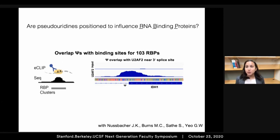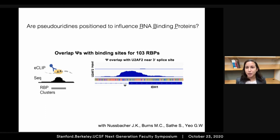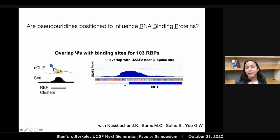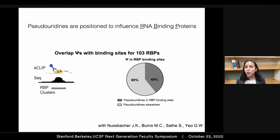To ask whether pseudouridines are positioned to influence the binding of RNA binding proteins, we collaborated with Dean Yo's lab at UCSD, where they've done UV cross-linking, immunoprecipitation, and sequencing of bound RNAs for hundreds of RNA binding proteins in the same cell type. We overlapped the location of pseudouridines in pre-messenger RNA with the binding sites of these RNA binding proteins, and found examples where the pseudouridine in a three-prime splice site region overlaps the binding site of a three-prime splice site recognition factor. Across the transcriptome, about 40 percent of the pseudouridines we identified in cells are present in the binding sites of RNA binding proteins and splicing factors, where they are poised to influence pre-messenger RNA processing.